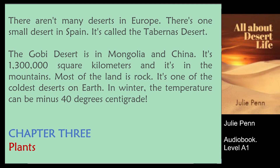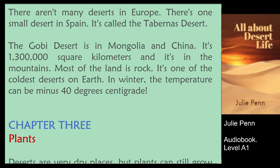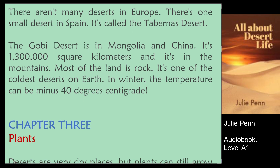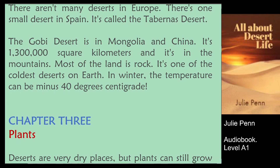The Gobi Desert is in Mongolia and China. It's 1,300,000 square kilometers, and it's in the mountains. Most of the land is rock. It's one of the coldest deserts on Earth. In winter, the temperature can be minus 40 degrees centigrade.